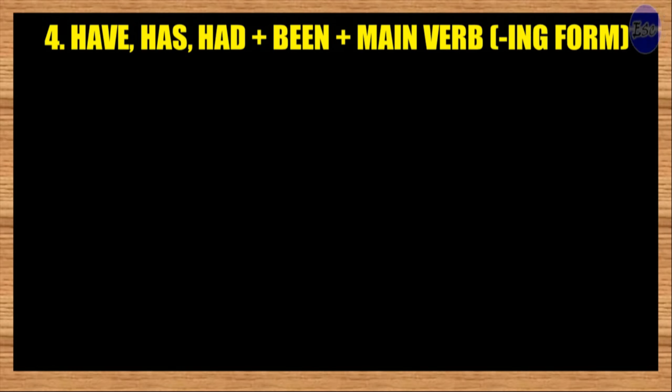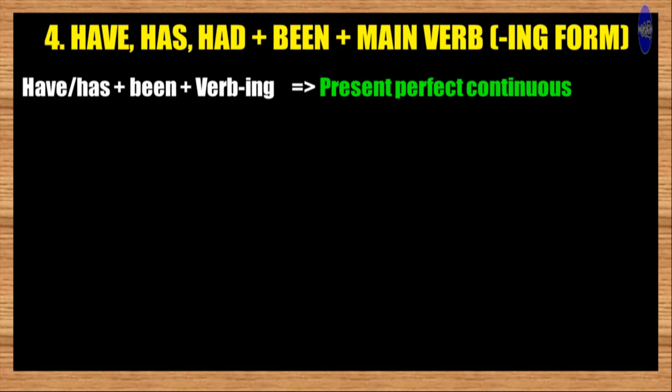Number four. Have, has, had, plus been, plus main verb in ING form. In this case, both the continuous aspect and the perfect aspect are expressed. The continuous aspect comes from the ING verb and the perfect aspect comes from the auxiliary verb 'have been.' When the auxiliary verb has or have is used, it creates the present perfect continuous aspect.